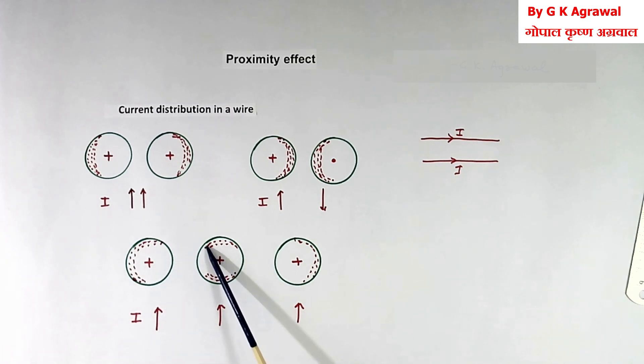In middle wire, current will flow here and here. So full area will not be used in any wire. So resistance of all wires will increase and losses will be more.